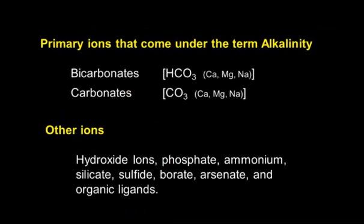Alkalinity is made up of several things — primarily bicarbonates and carbonates. These can be calcium bicarbonate, magnesium bicarbonate, or sodium bicarbonate. In some rare cases they're carbonates: calcium carbonate, magnesium carbonate, sodium carbonate. Other ions that can affect alkalinity include hydroxides, phosphates, ammonium, and silicates, but generally speaking you don't find those in water. When you're talking about alkalinity, you're talking about bicarbonates.